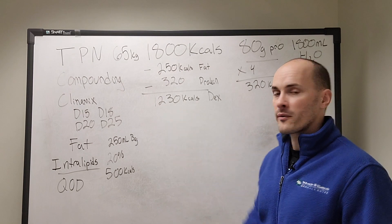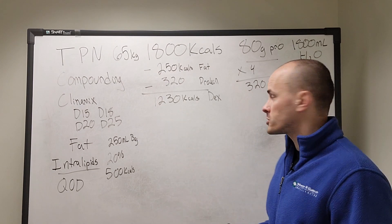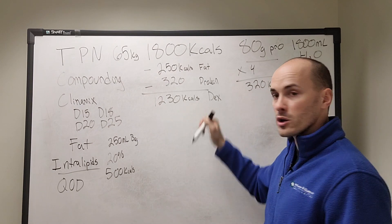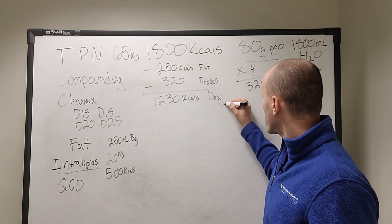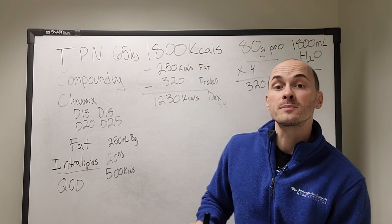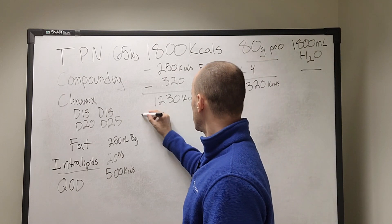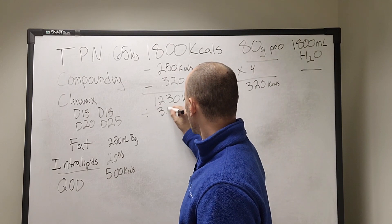So here we have a remaining need of 1,230 calories from dextrose. Remember dextrose is 3.4 calories per gram.